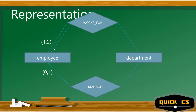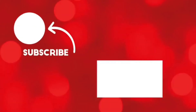In terms of ER diagram representation: total participation is represented with two lines on the side of the entity set that must participate in the relationship — for example, every employee must work for a department. A single line represents partial participation — for example, not every department needs all employees. So double line means total participation and single line means partial participation.